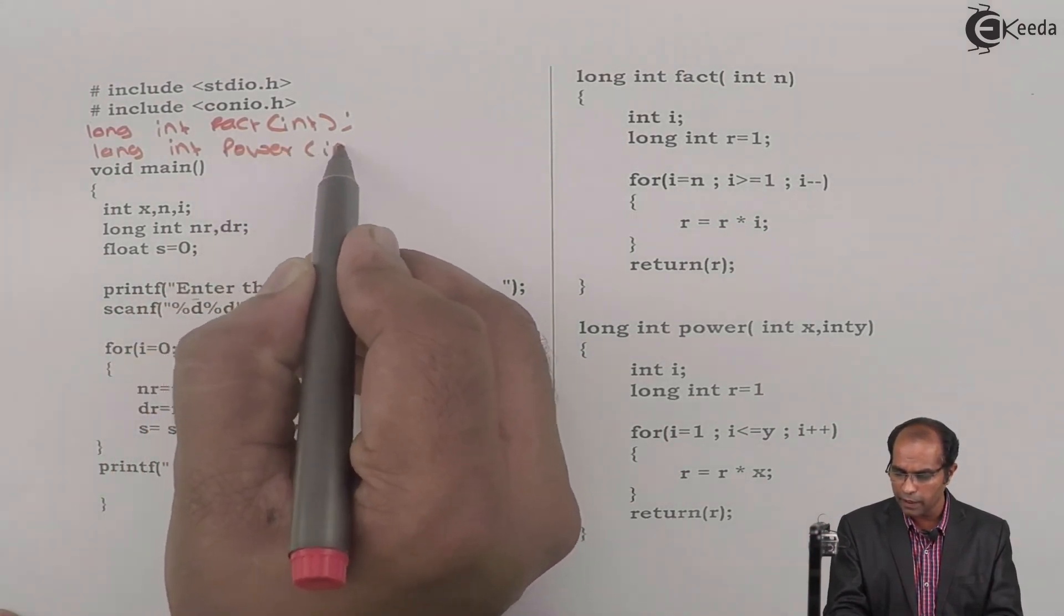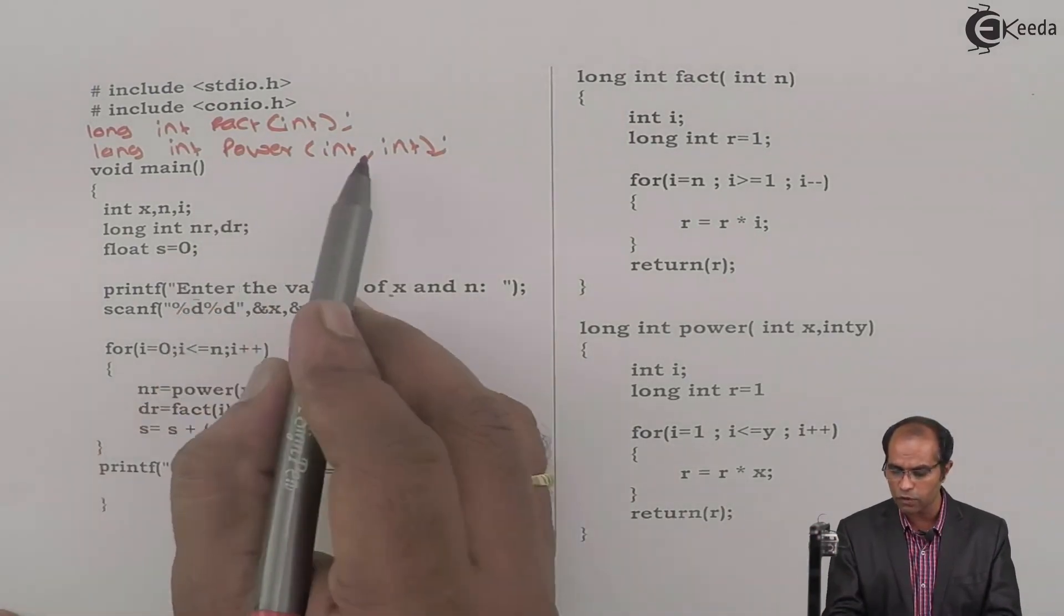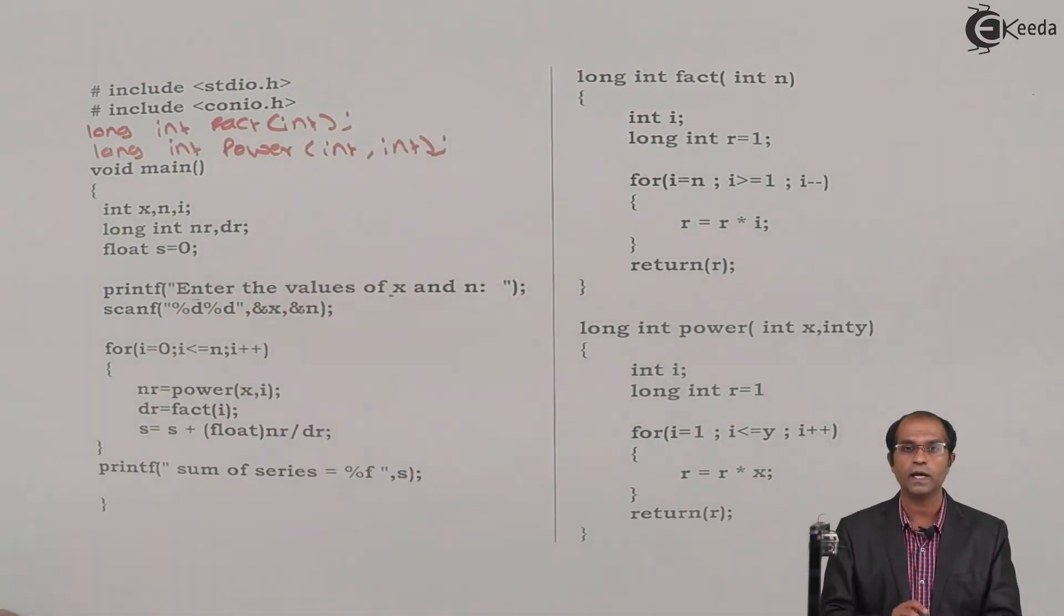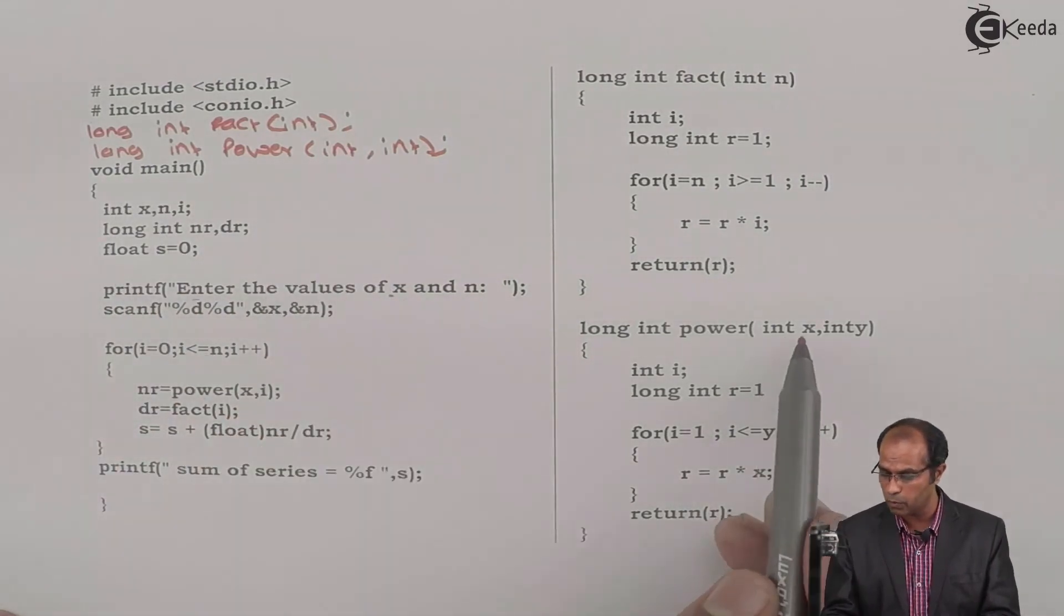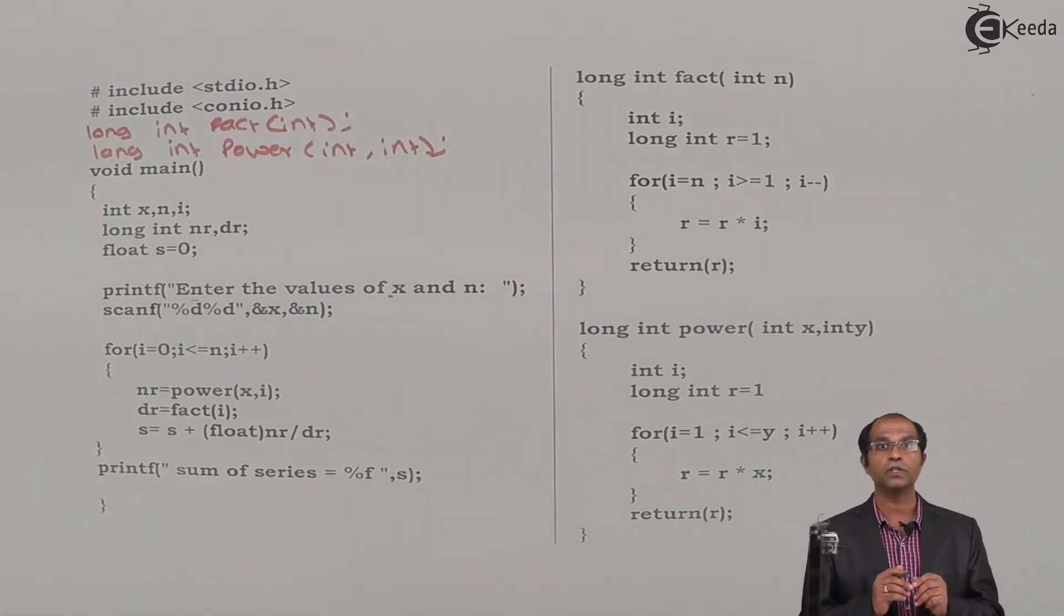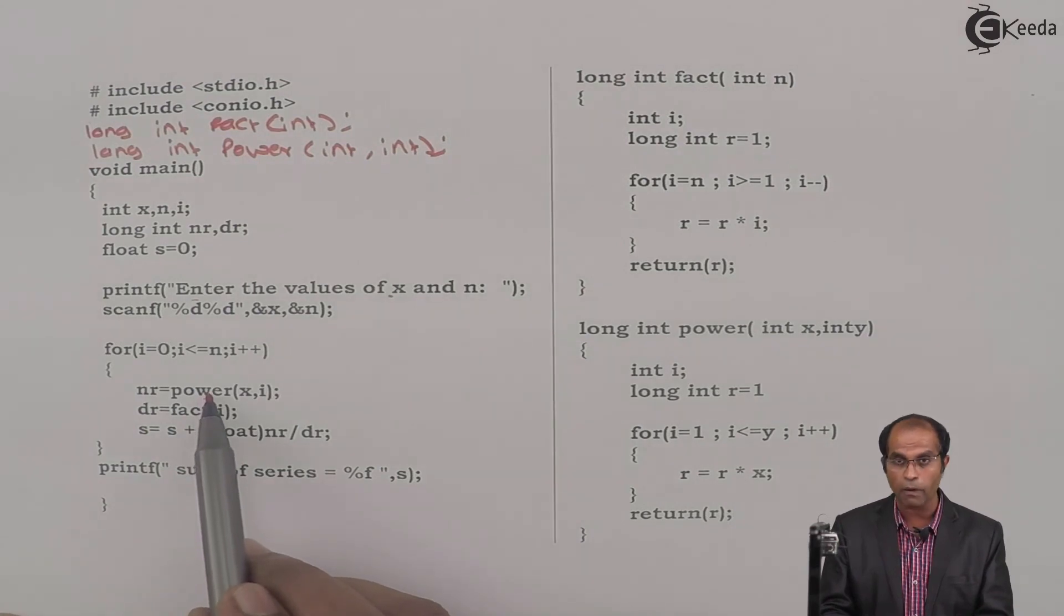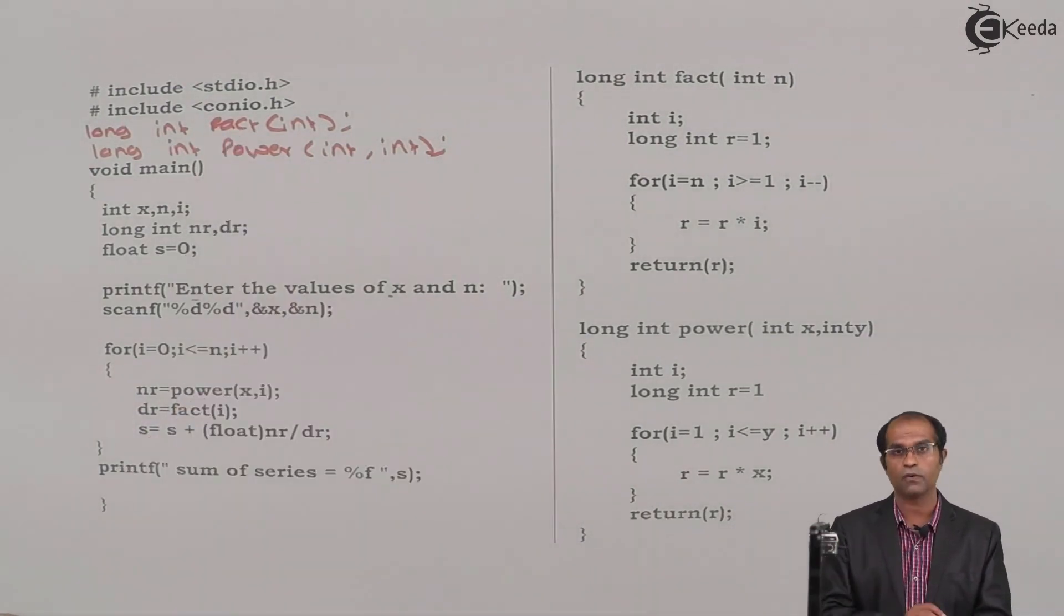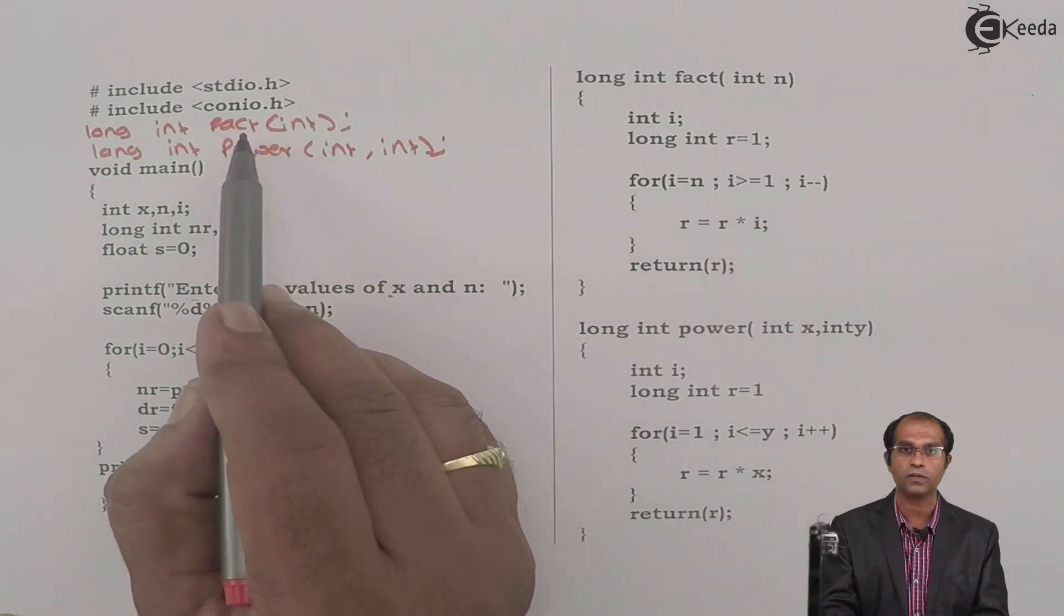Similarly, I'll say long int and then power, and here int, int at this place. So we can have this function written with int, int because both are going to accept integer values. Now don't argue that since I have called power function, I have to do the declaration of power first. You can write the declaration in any random order, irrespective of the definitions how they appear.